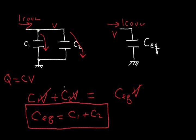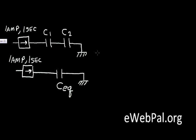So for capacitors connected in parallel, to get the equivalent capacitor you just add the two together. Now let's do the same thing for series capacitors.